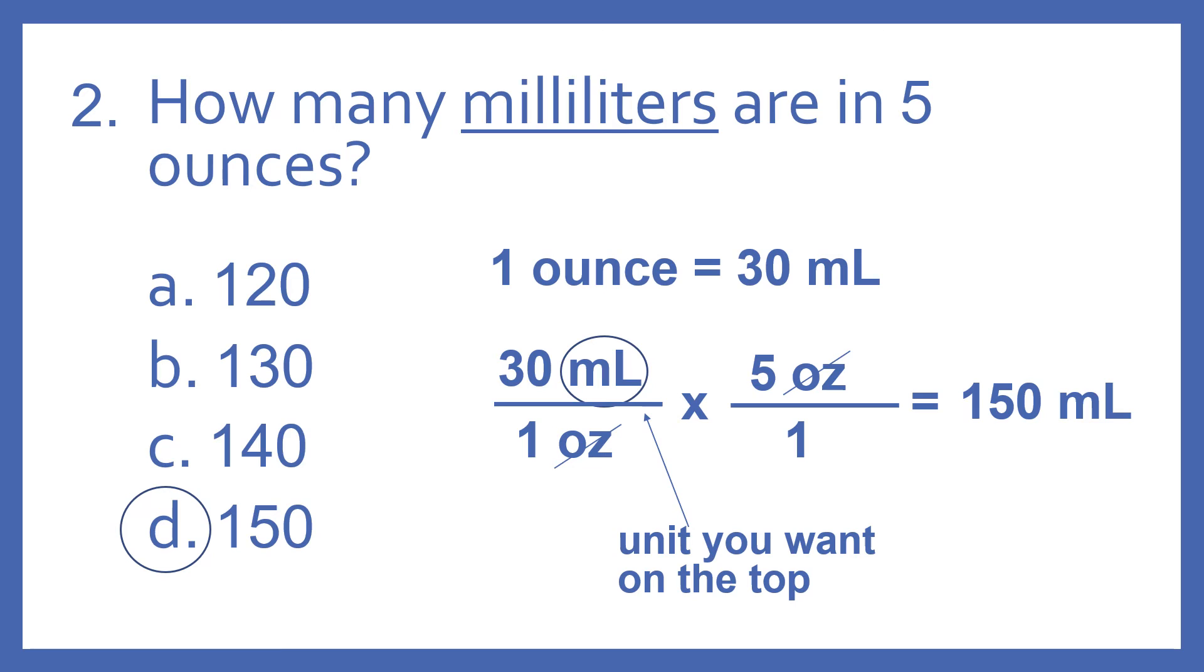Then we just do the math. So 30 times 5 is 150. And then 1 times 1 is, of course, 1. So we're left at 150 milliliters.